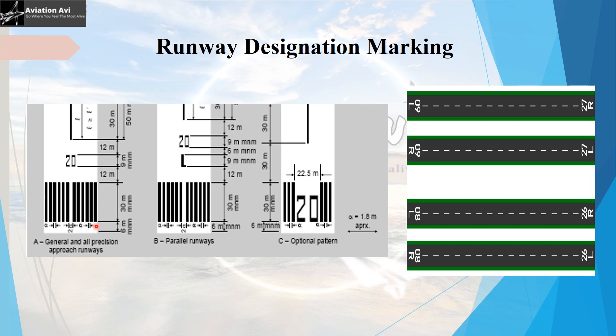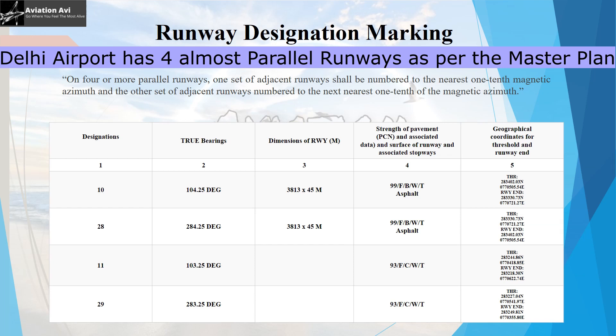Regarding the layout of markings: leaving 6 meters from the threshold, the threshold stripes are marked. Then leaving a further gap of 12 meters, the runway designator is marked with a minimum length of 9 meters. Where the designator is supplemented by a letter (L, R, or C) for parallel runways, the gap between the designator and the letter is a minimum of 6 meters.